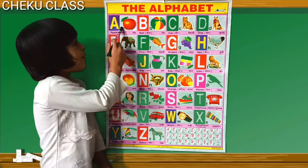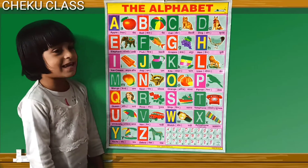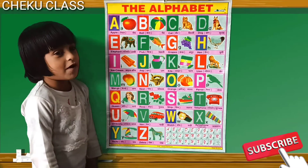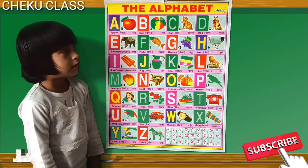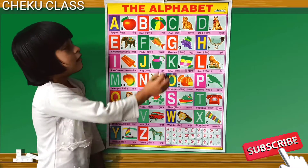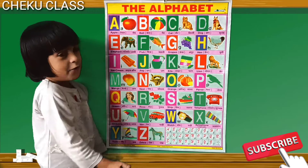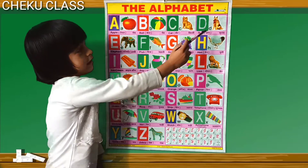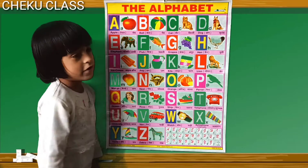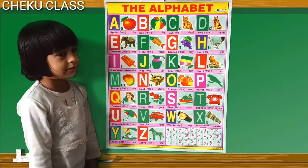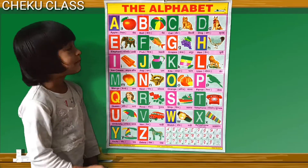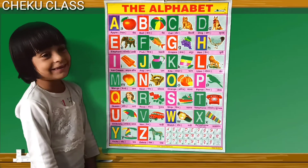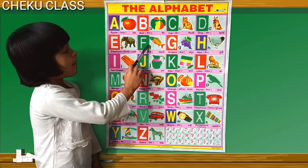A for apple, B for ball, C for cat, D for dog, E for elephant.